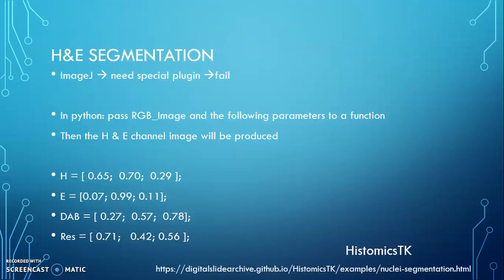So then I tried the H&E segmentation. A lot of articles use ImageJ software because this one is used in the medical field a lot. But when I want to use that software, it says I need some special plugin for the H&E segmentation. So at that time it failed, but when I tried it last night I got success. So I could do some more things on the H channel and E channel now.